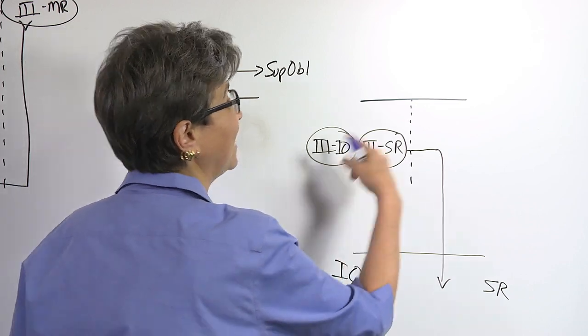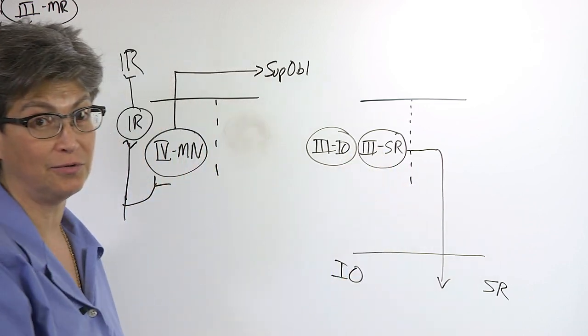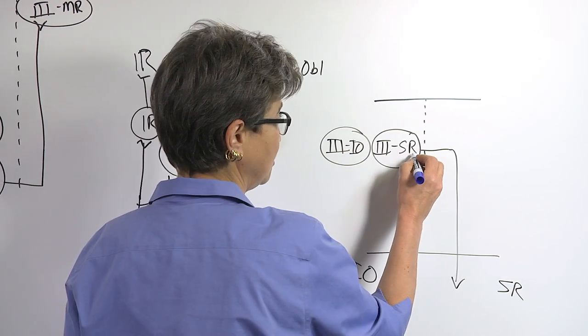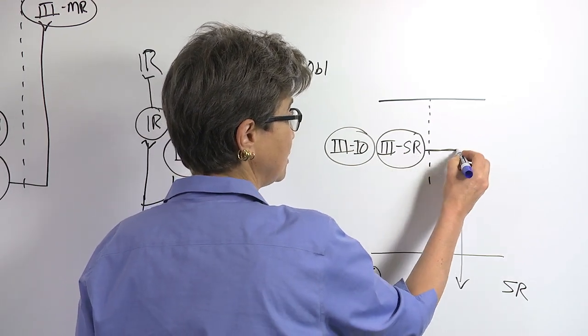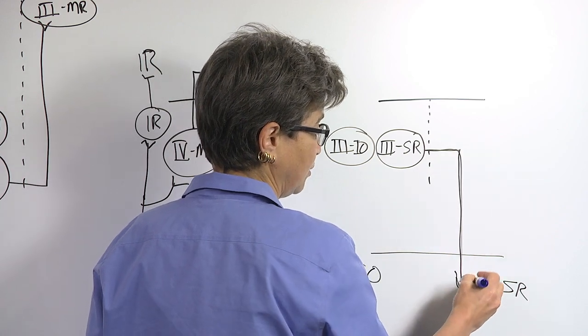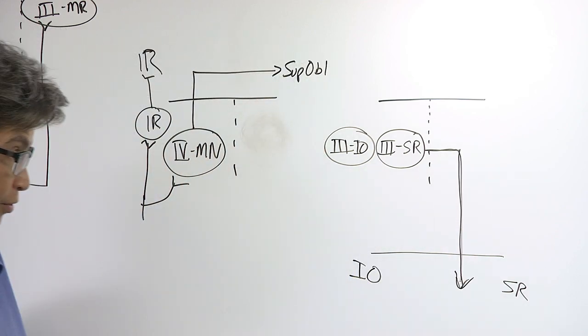...that innervate the contralateral superior rectus. And these motor neurons that innervate the contralateral superior rectus cross the midline in the midbrain and then just exit with the contralateral third nerve.